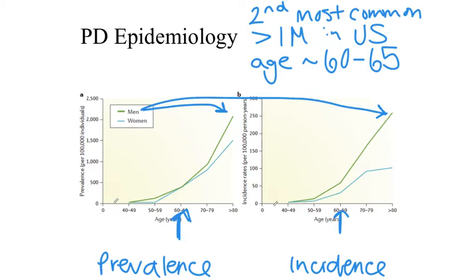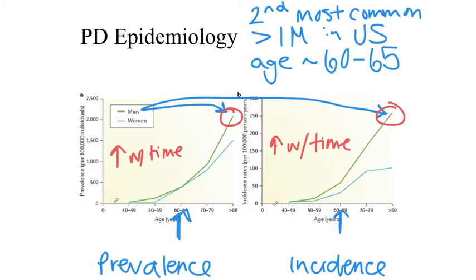In general, what we can learn from these images is that the prevalence of Parkinson's disease increases over time. As we age, there are more likely to be more cases of Parkinson's disease. In addition, these graphics display the fact that there are more cases of Parkinson's disease in men. In fact, the incidence of Parkinson's disease in women plateaus between the ages of 70 and 79, meaning a woman who lives past about 75 years without a Parkinson's diagnosis is not very likely to be diagnosed after that time. However, a man who lives to age 75 or older has a much greater likelihood of being diagnosed with Parkinson's disease as they continue to age.